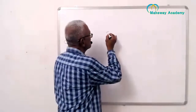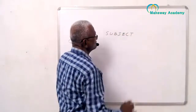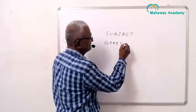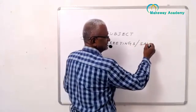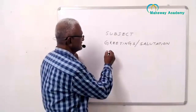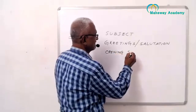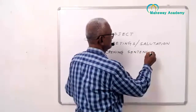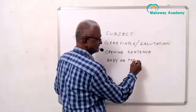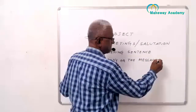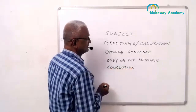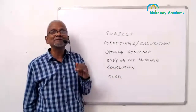The first element is the subject. The second one is the greetings, or you can call it the salutation. The third one is the opening sentence. The fourth one is the body, or the message. The fifth one is the conclusion. The last one is the close. This is the email structure.